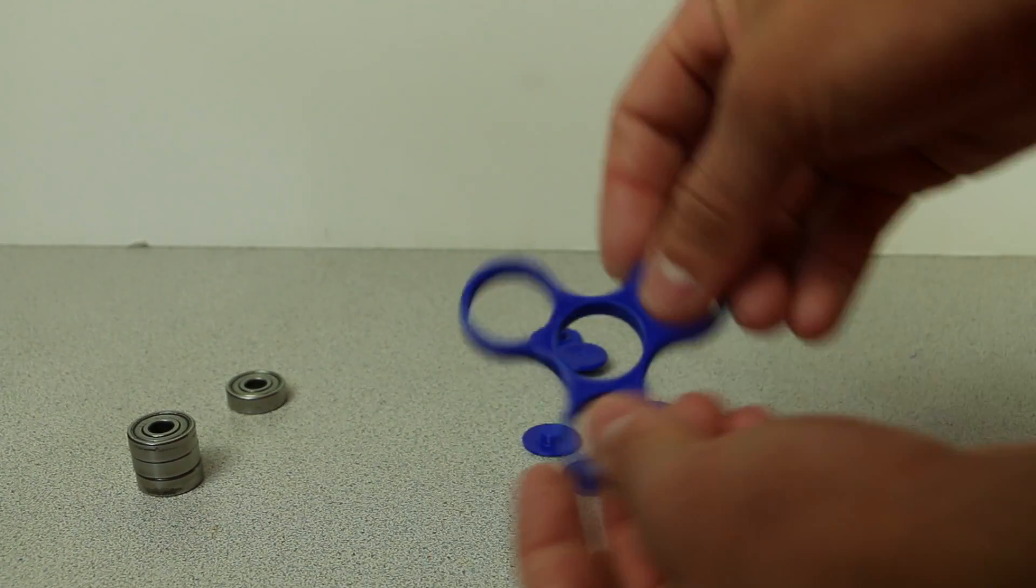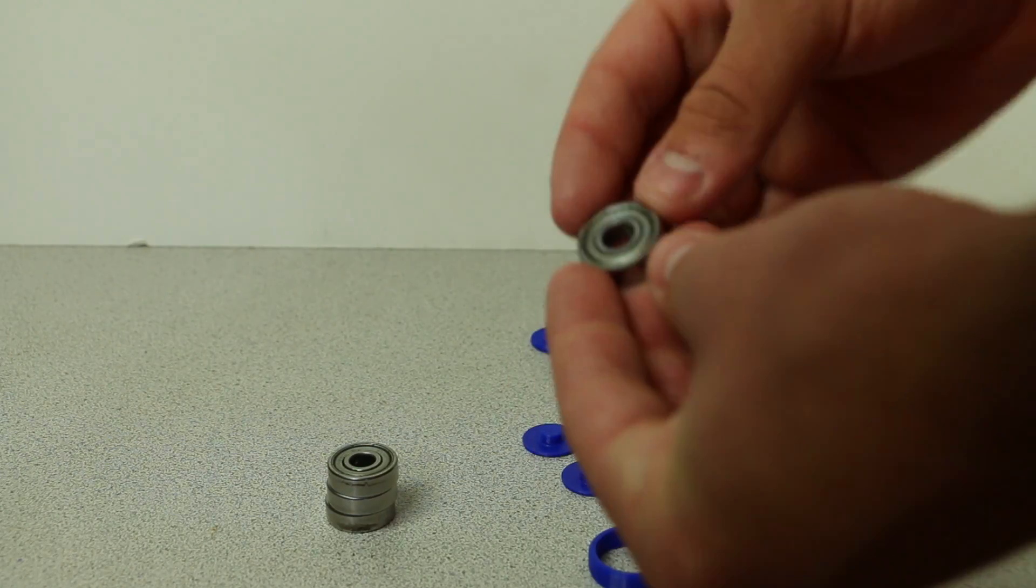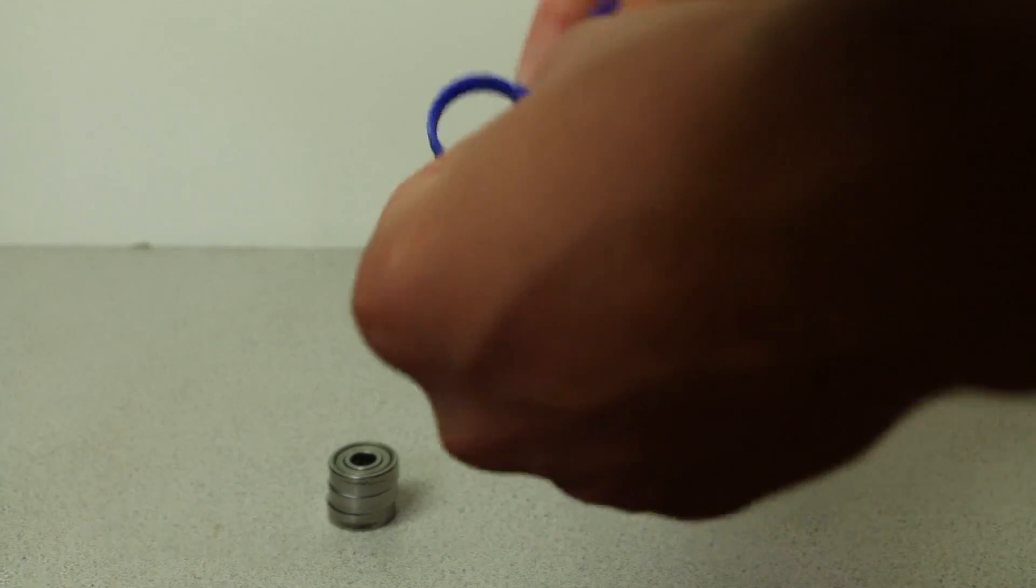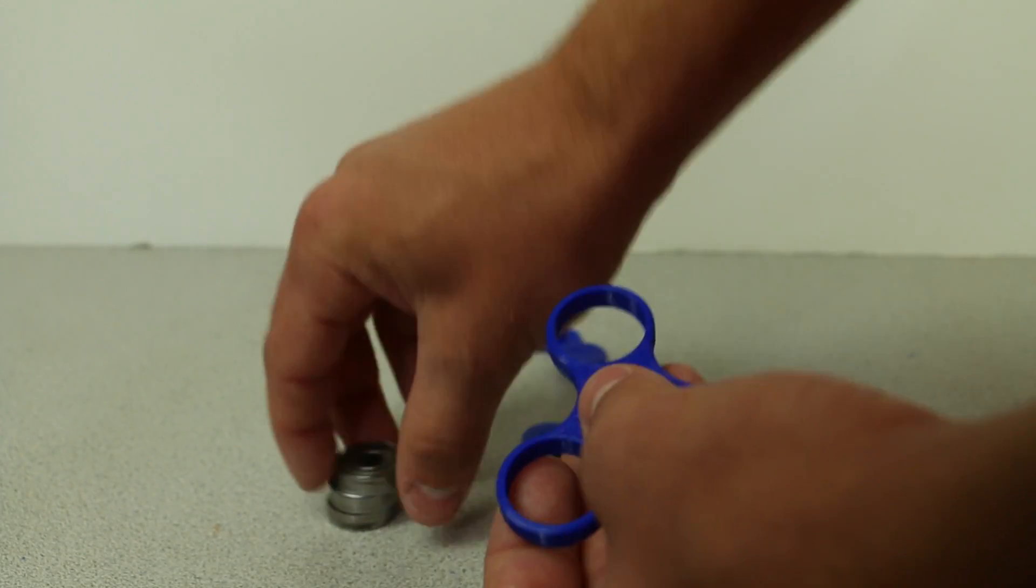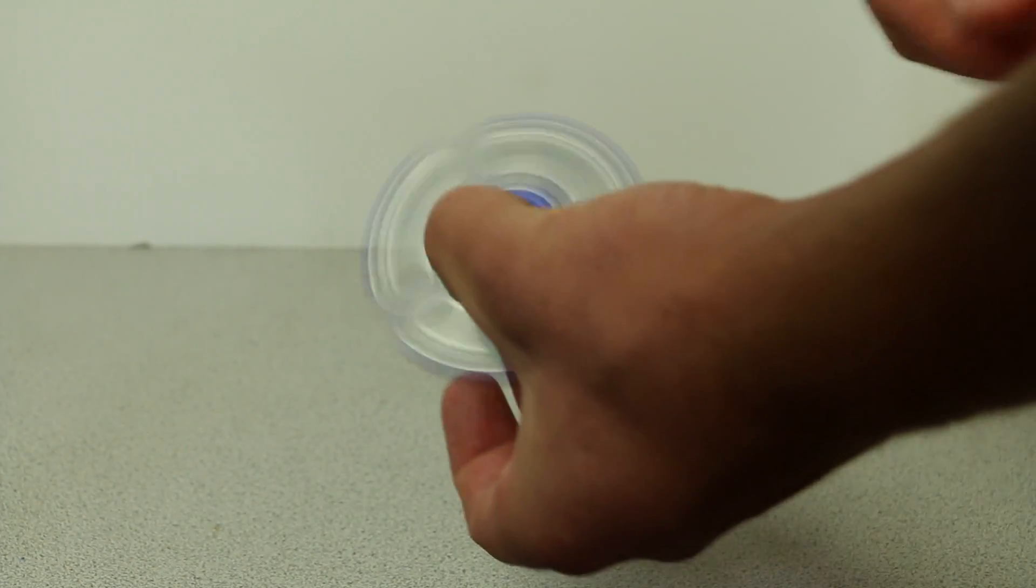So to assemble these, we are actually going to need bearings, and that's what we have over here. And these are just simple skateboard bearings, and these fit in the center here of these things like that. So if we put each bearing in, that's how it's supposed to work, and then you spin it around.